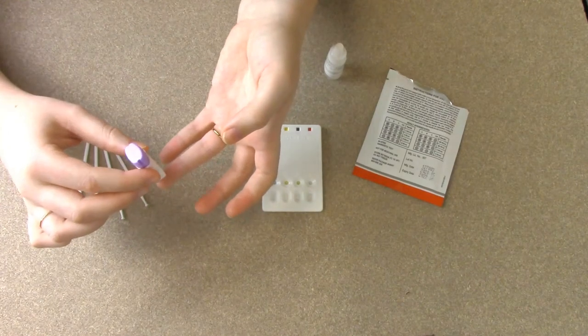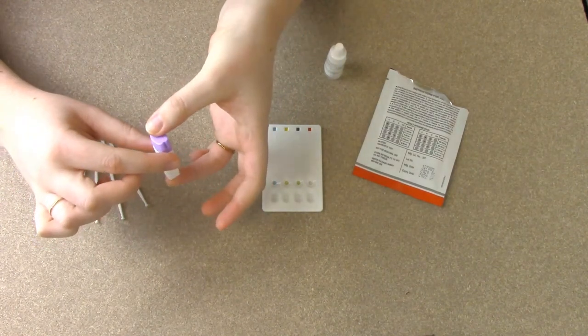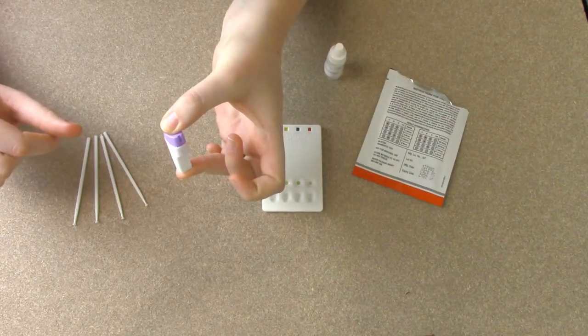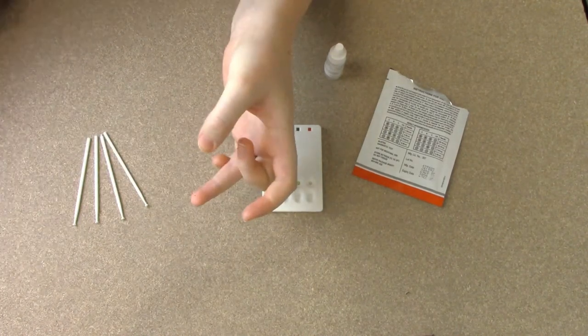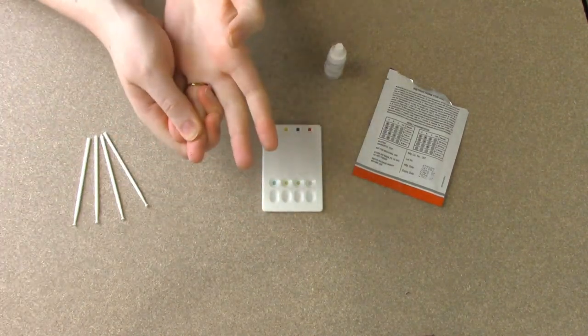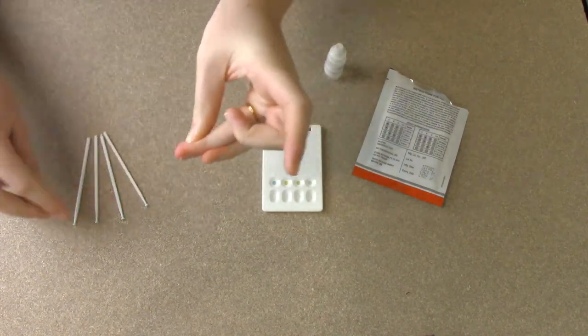Place it onto the finger that you just cleaned with alcohol swab and you're going to press with your thumb until you feel a prick. Set your lancet aside and you can see that blood is starting to pool.